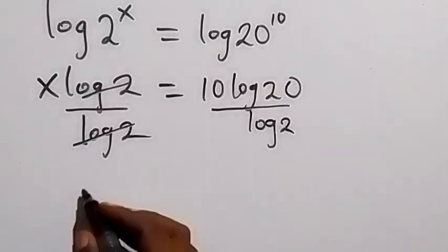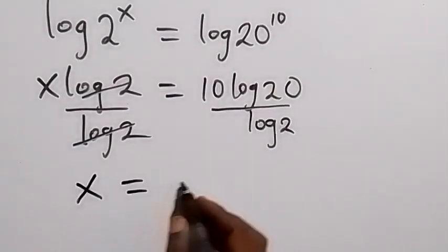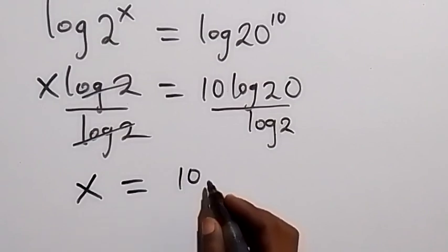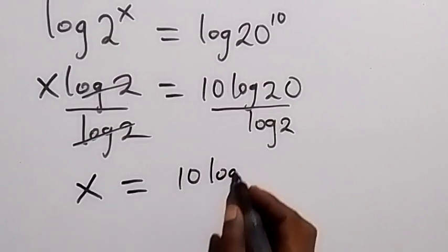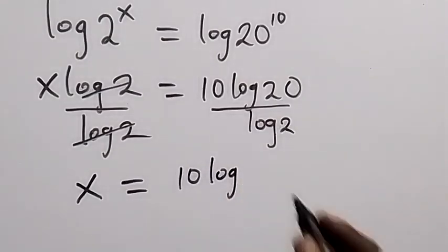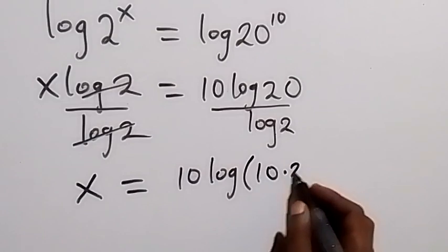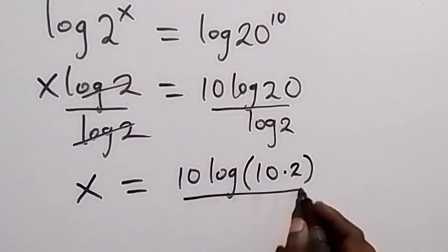...and what we have left here will be x equals to 10 log 20 over log 2. And also we can write log 20 as 10 multiplied by 2, then over log 2.